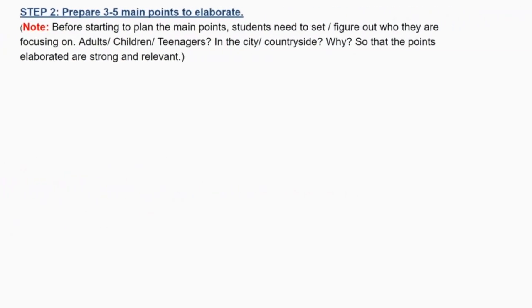Step 2: prepare three to five main points to elaborate. Before starting to plan the main points, students need to set or figure out who they are focusing on — adults, children, teenagers? From where — in the city, countryside? This is so that the points elaborated are strong and relevant.